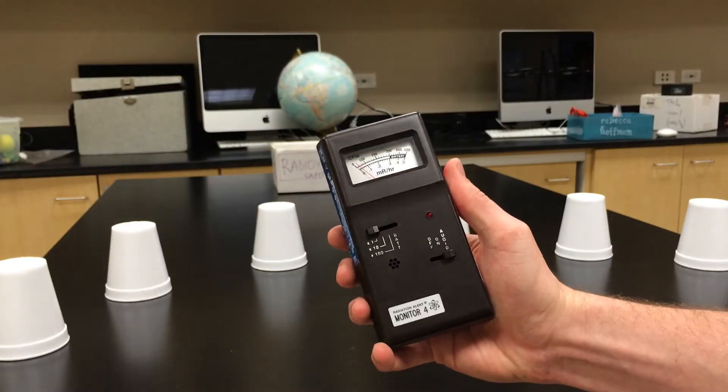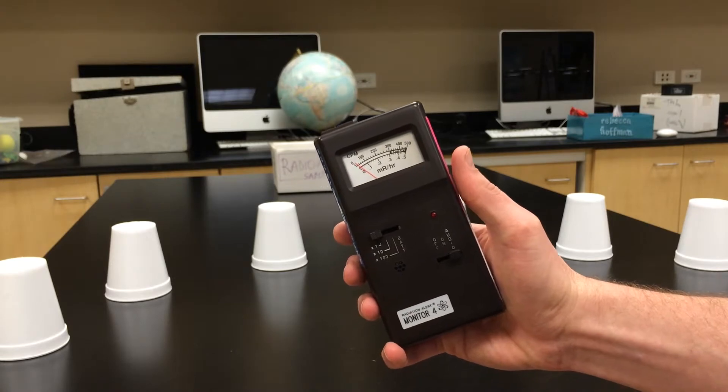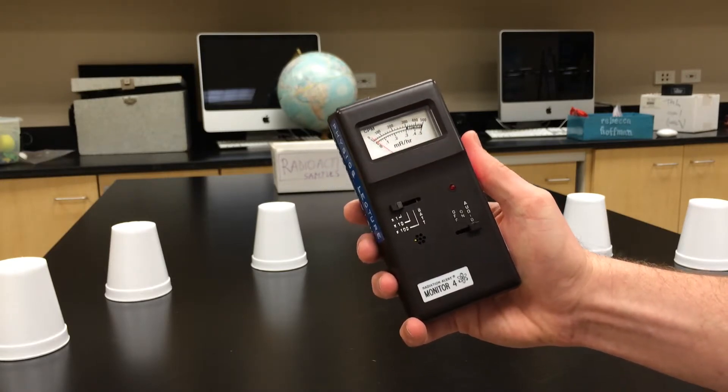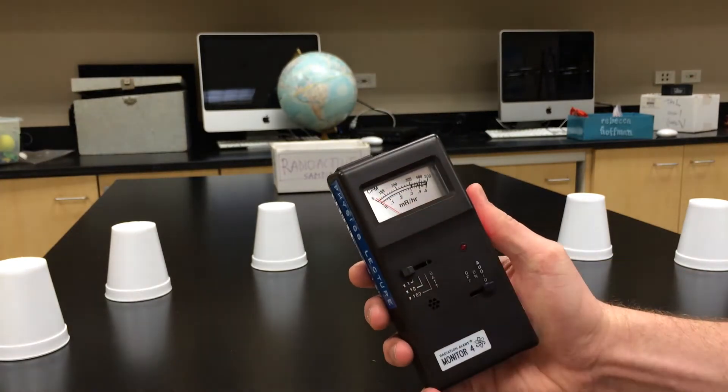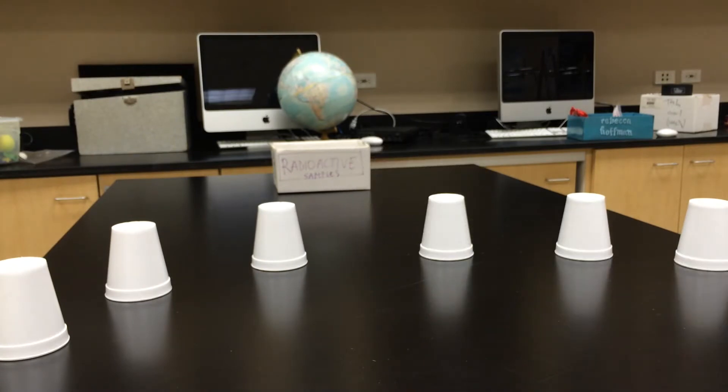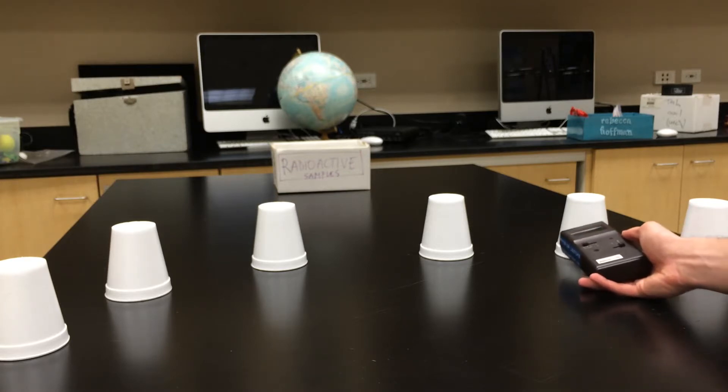This is a Geiger counter. It makes a beep whenever there is radiation nearby. It actually is measuring in counts per minute right now. And one of these six cups has radioactive samples stored and hidden. Let's see if we can figure out which cup it is.